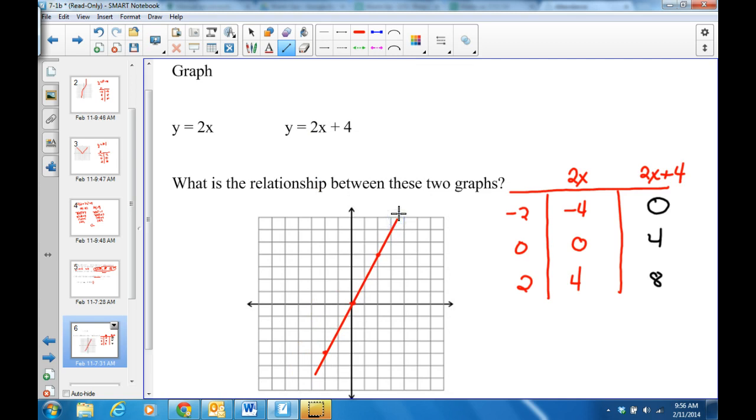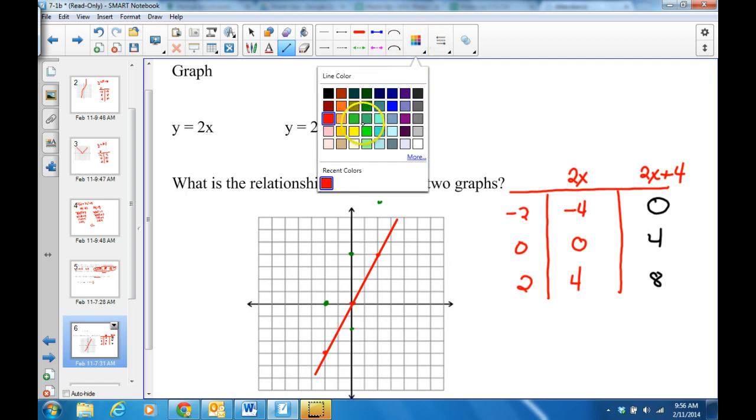Let's try for the second one now. Negative 2, 0. So at this point I would start here. Go over 2, down nothing, right here. And 0, positive 4. And then 2, positive 8. So that would be way up here. Draw my line. I'm going to use green for this one because I had green points.